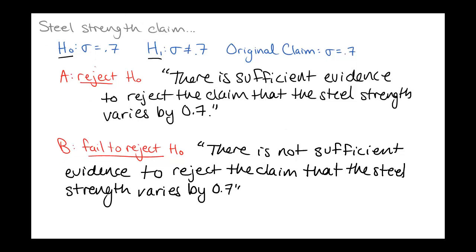Restating conclusions can be confusing because it depends on what the original claim was, what the null hypothesis is, and what the alternative hypothesis is. Think through whether you're rejecting the null hypothesis and what that means — if you are, the alternative hypothesis is what you're saying is likely true. There's a handy table on page 391 in the textbook that shows how to word the conclusion based on the original claim and whether you're rejecting or failing to reject the null hypothesis — a good guideline to use.